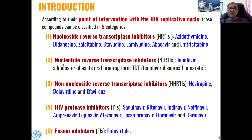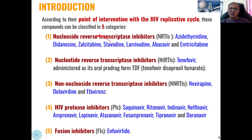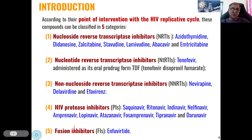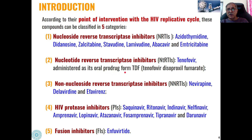The second category of compounds used for intervention in the HIV replicative cycle are nucleotide reverse transcriptase inhibitors. This category features nucleotide-based structures rather than nucleoside. We will see during following lectures, when we discuss the synthesis of these compounds, that their structure will include nucleotides. The example is tenofovir, and tenofovir is given as an oral drug in the form of tenofovir disoproxil fumarate.